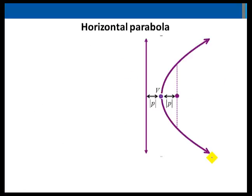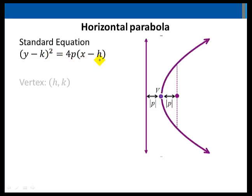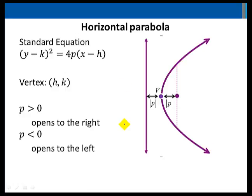A horizontal parabola has the standard equation (y - k)² = 4p(x - h). If p is greater than 0, the parabola opens to the right, and if p is less than 0, a horizontal parabola opens to the left.